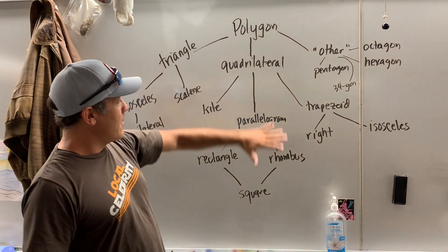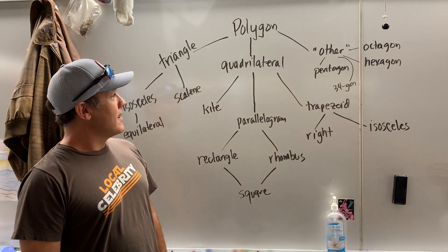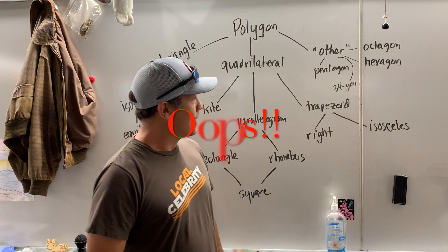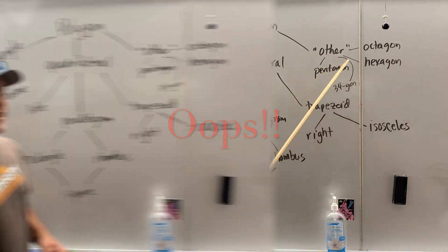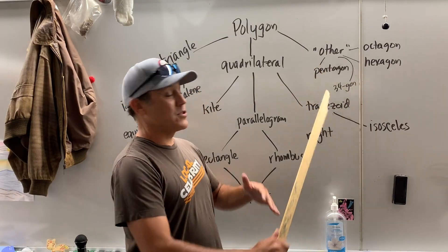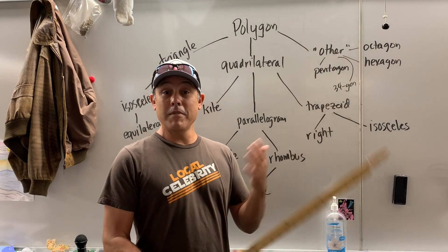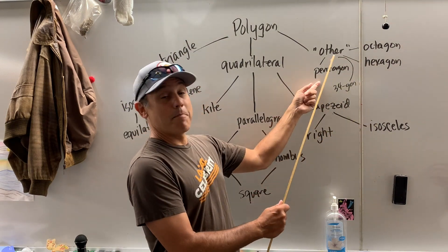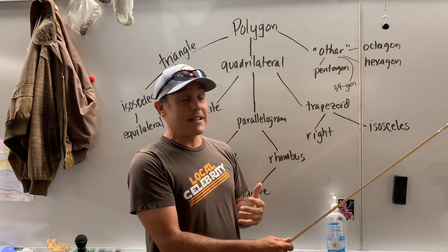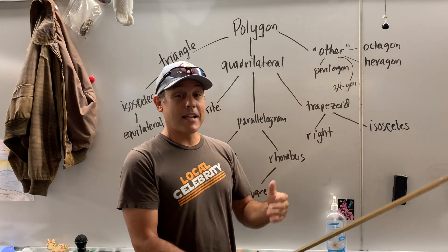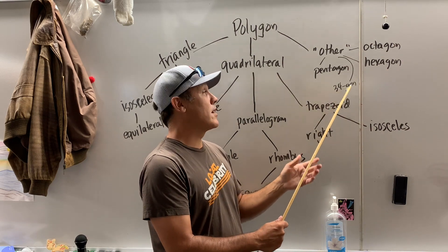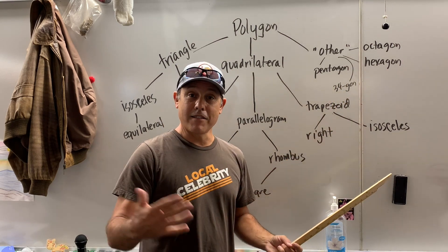At any rate, here are your shapes in a nutshell. And now we're going to finish off with 'the other,' which is a whole ton — an unlimited amount of shapes. You know, the pentagon is five sides, octagon is eight sides, hexagon is six sides, and then we've run out of names. 34 sides? We call it a 34-gon, et cetera, et cetera.